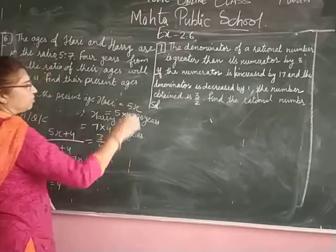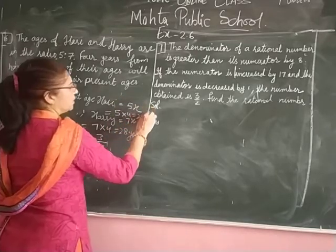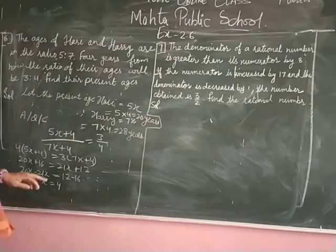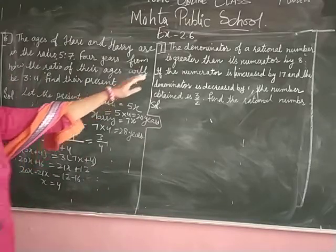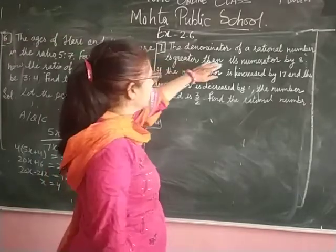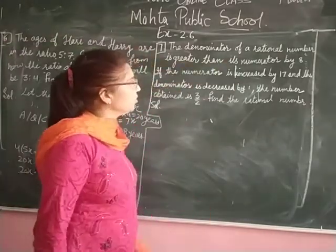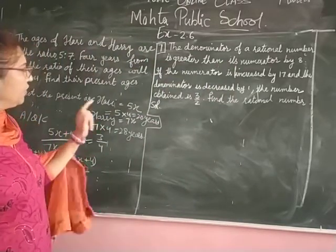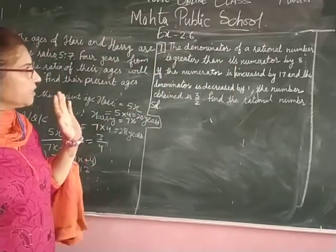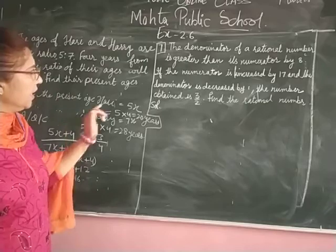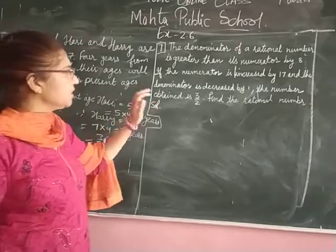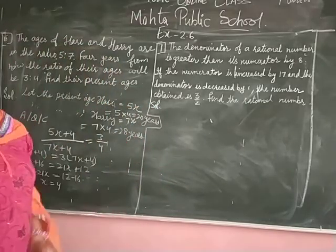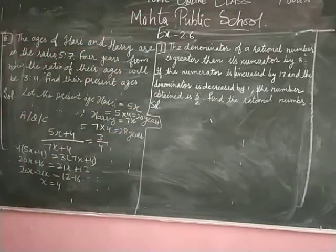Now we will do the last question of this exercise. The denominator of a rational number is greater than its numerator by 8. If the numerator is increased by 17 and the denominator is decreased by 1, the number obtained is 3 upon 2.